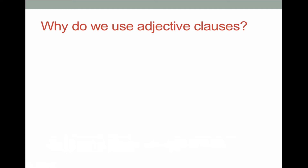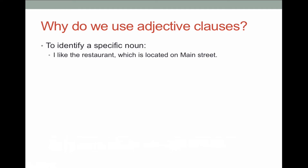So why do we use adjective clauses? To identify a specific noun. If I say 'I like the restaurant,' you're not really going to know which restaurant I'm talking about. So by adding the adjective clause 'which is located on Main Street,' now you know which restaurant I'm talking about. It's used to identify specific nouns. When you see things like 'a restaurant' or 'the restaurant,' adjective clauses can help identify those for you.